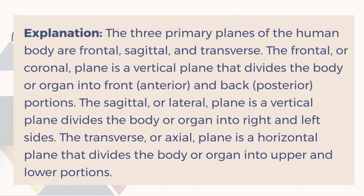Explanation. The three primary planes of the human body are frontal, sagittal, and transverse. The frontal, or coronal, plane is a vertical plane that divides the body into front (anterior) and back (posterior) portions. The sagittal, or lateral, plane is a vertical plane that divides the body into right and left sides. The transverse, or axial, plane is a horizontal plane that divides the body into upper and lower portions.